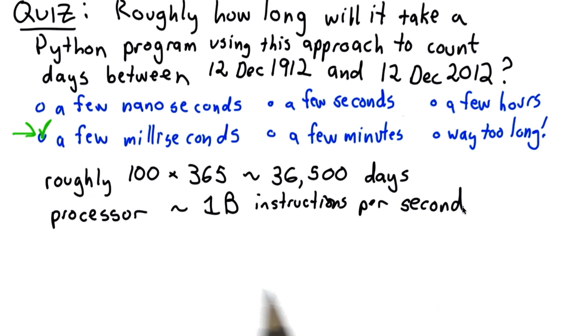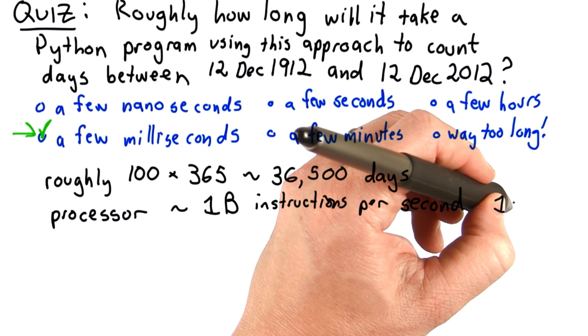A modern processor can do about a billion instructions per second. So that means 1 nanosecond per instruction.